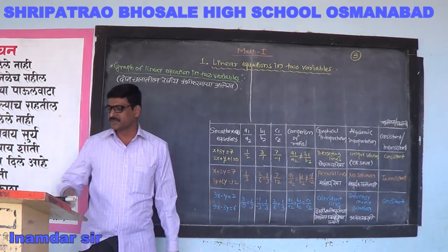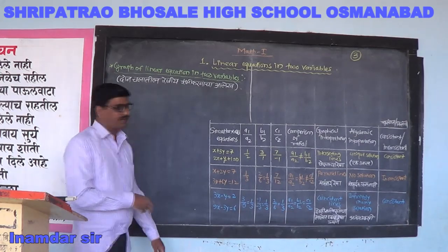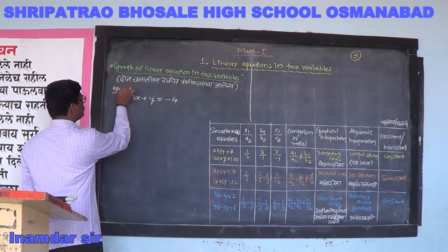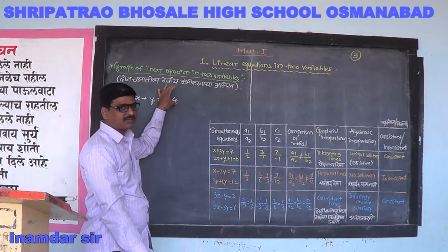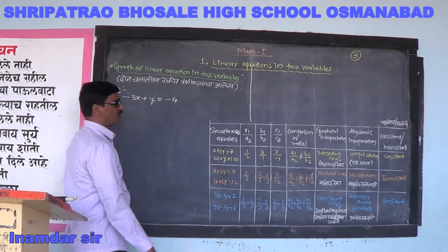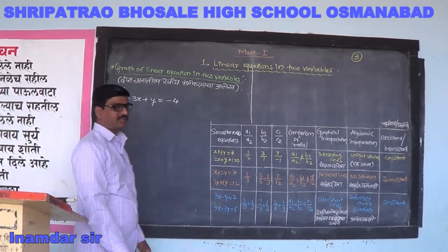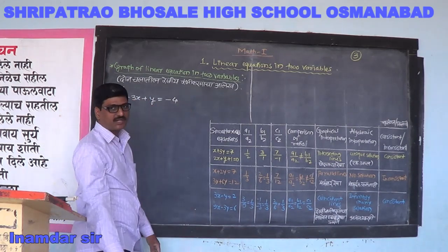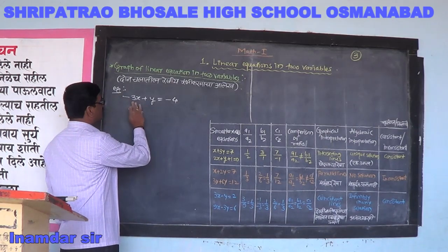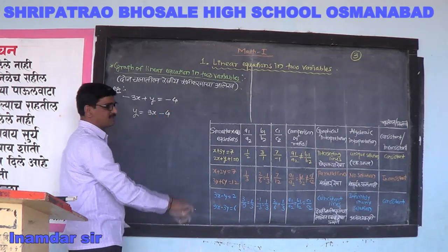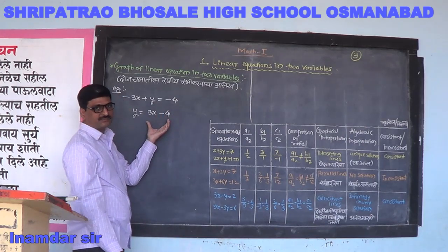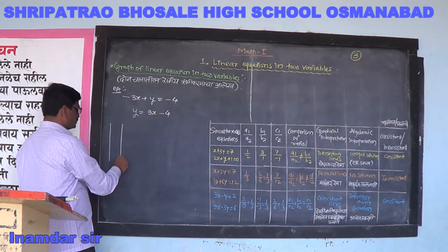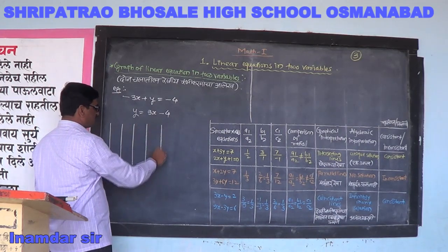Let us study one example of a linear equation in two variables and how to draw the graph. The example is minus 3x plus y is equal to minus 4. To draw the graph of this equation, first we have to find the coordinates, and the coordinates can be obtained by making a table. We write this equation — minus 3x will be transferred to the right side, so we get y is equal to 3x minus 4. Then we make a table to get the coordinates, taking 3 coordinates to get a better line.